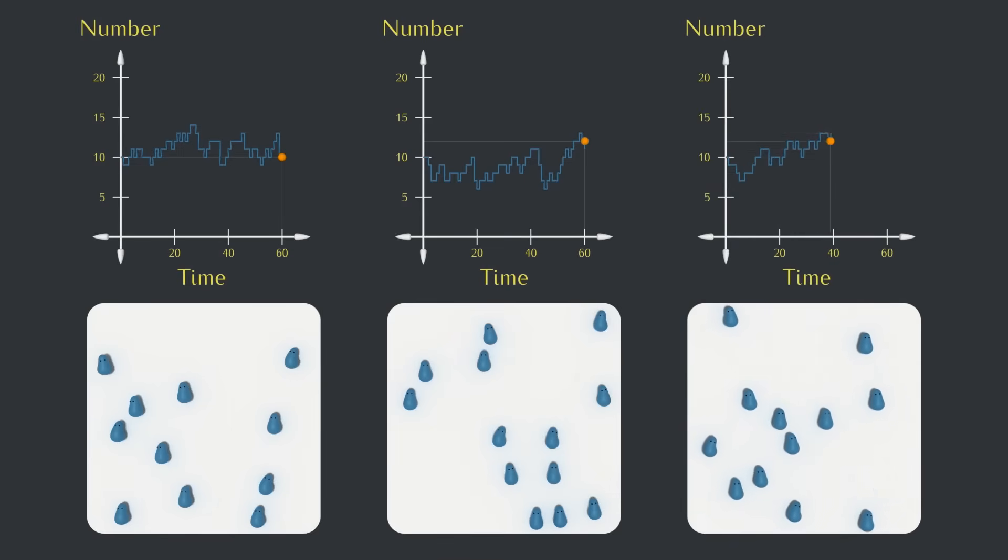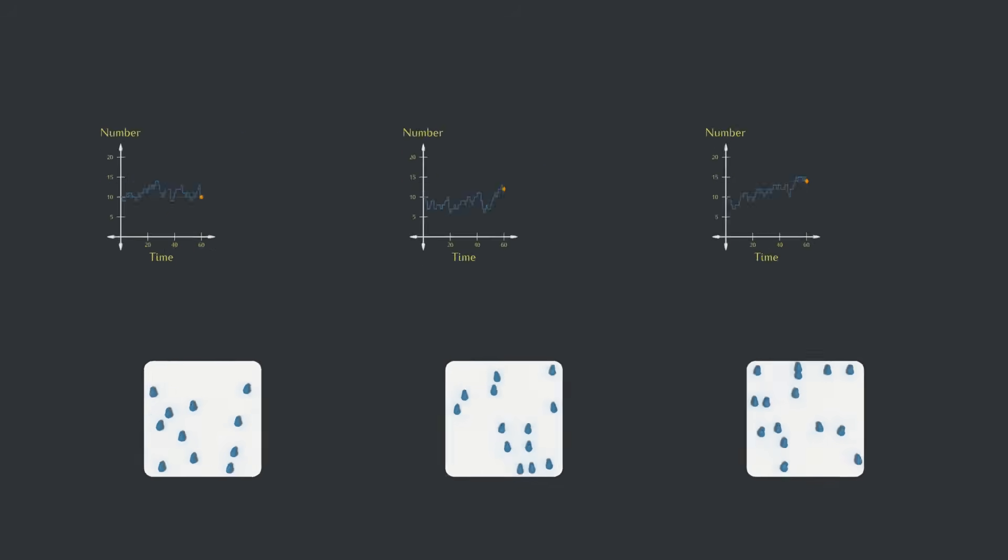Our second kind of graph will take a bit longer to build, but it'll help us understand what these number over time graphs have in common, and even predict what we'd expect the graph to look like before we run a simulation.